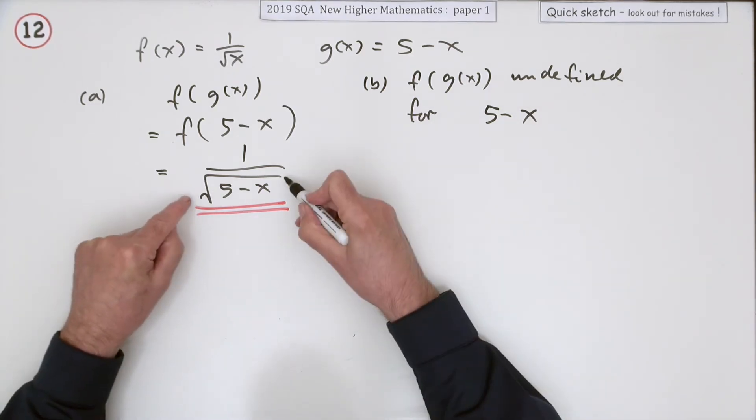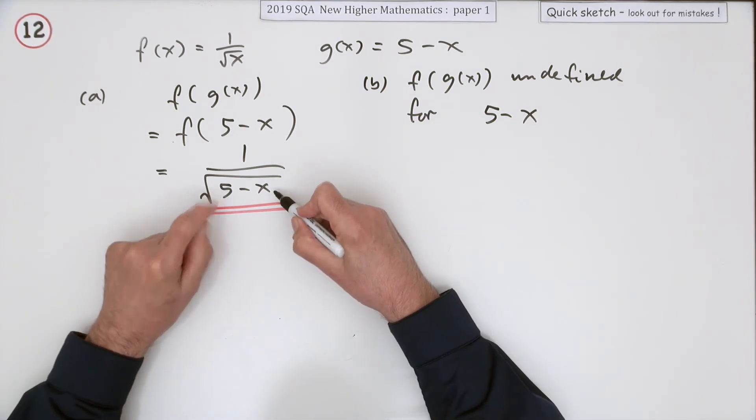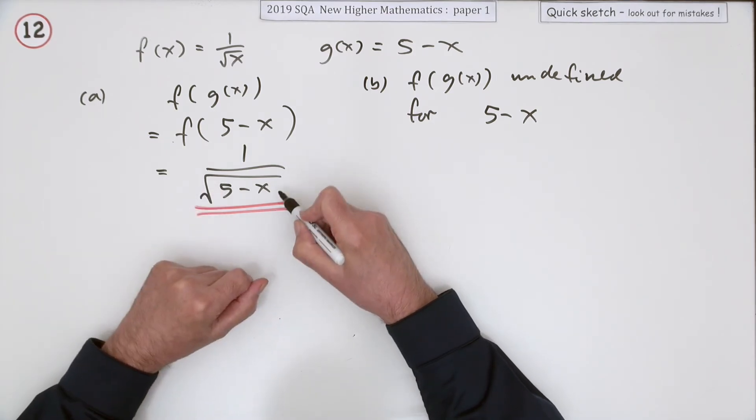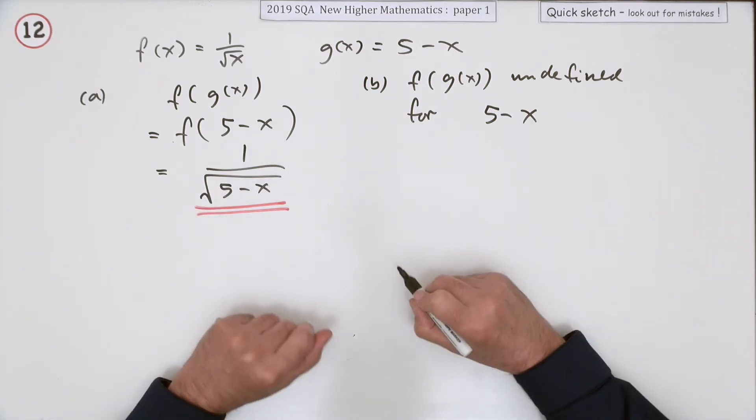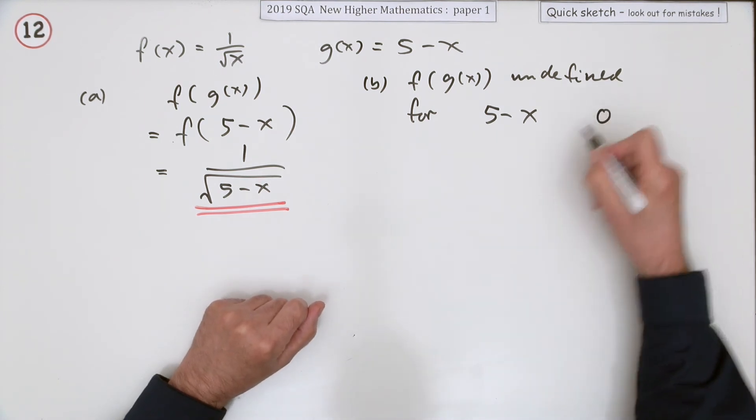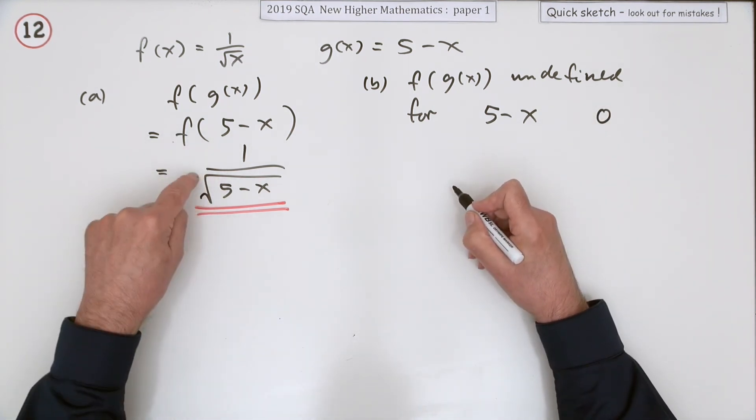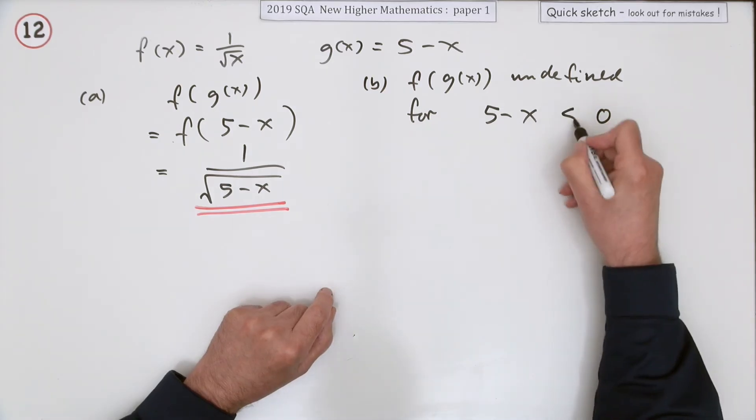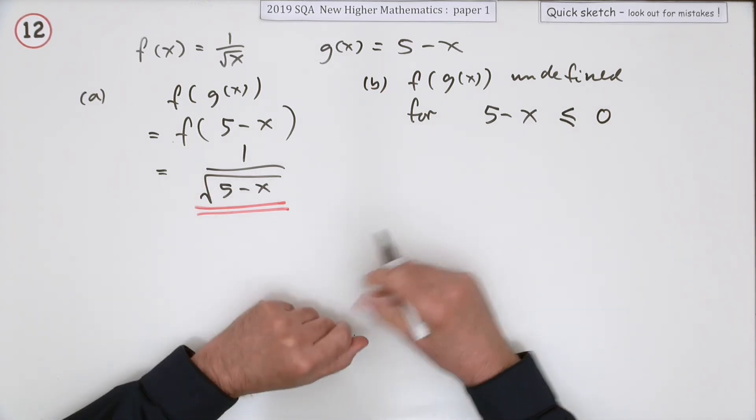And also you can't do the square root of a negative. So 5 minus x can't be less than 0. So it's got a double whammy. It can't be equal to 0 because then you'll be dividing by 0, and it can't be less than 0 because then you'll be doing the square root of a negative.